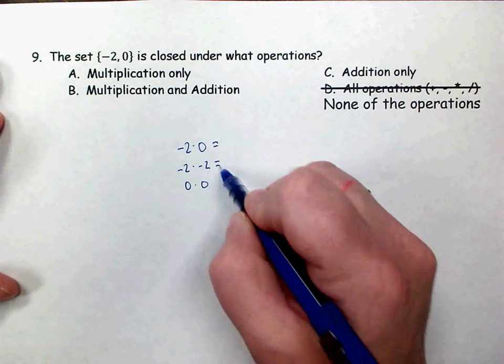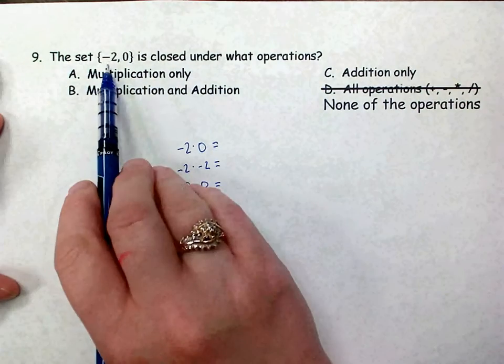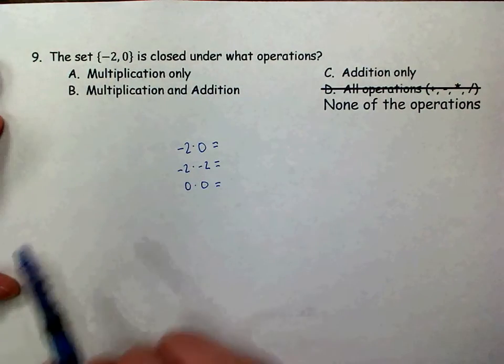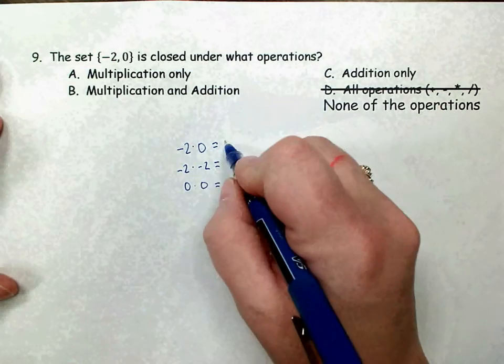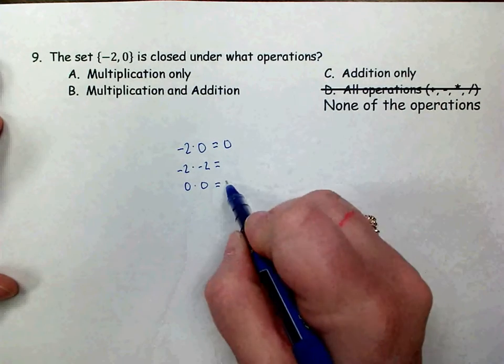The answers are always going to be either negative 2 or 0. Well, negative 2 times 0 is 0, and 0 times 0 is 0.